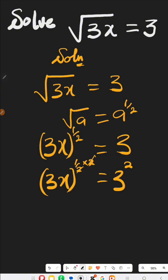2 we cancel to left with 3x equals to 9. What are we going to do here? We divide both sides by 3, and when we divide both sides by 3 we are going to have x equals to 3.